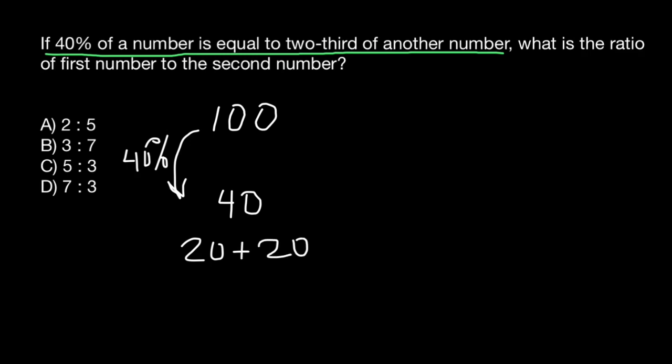So 40 is two-thirds of the second number. We can say that the second number is 60, and 40 would be two-thirds of that second number. So the first number is 100 and 60 is going to be the second number.